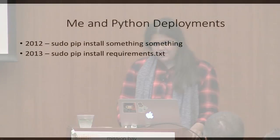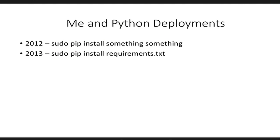2013 was probably when I realized that there are a few more features to pip than just pip installing something, so I probably wrote my first requirements.txt file to encompass more than a single requirement, and again sudo pip installed everything.